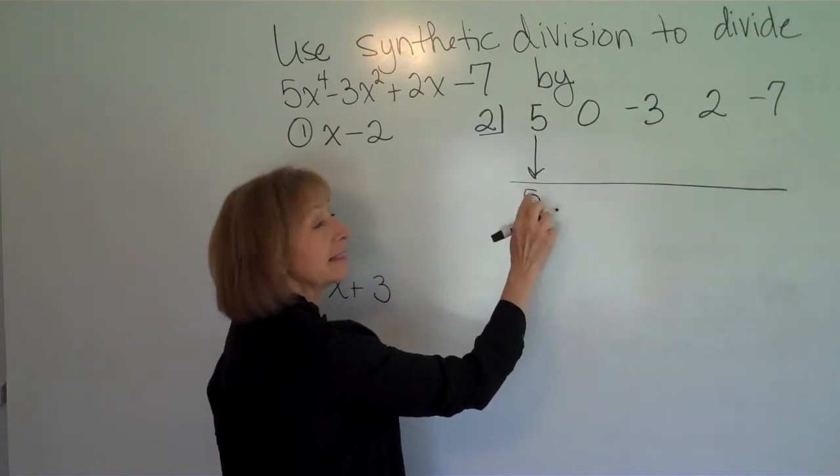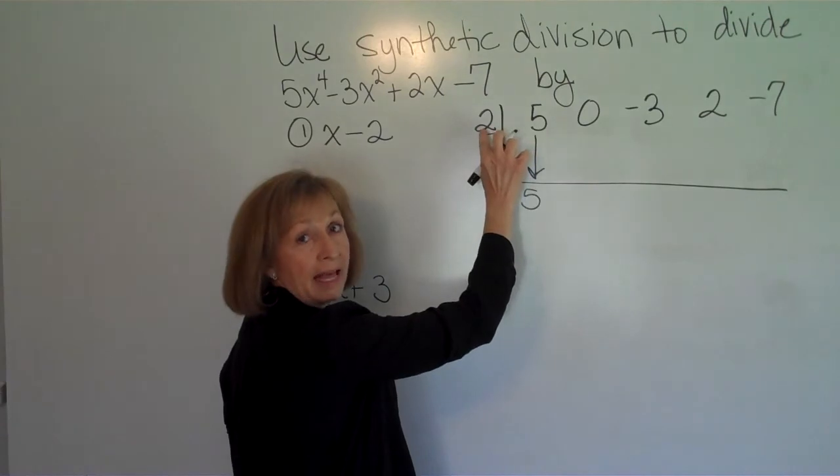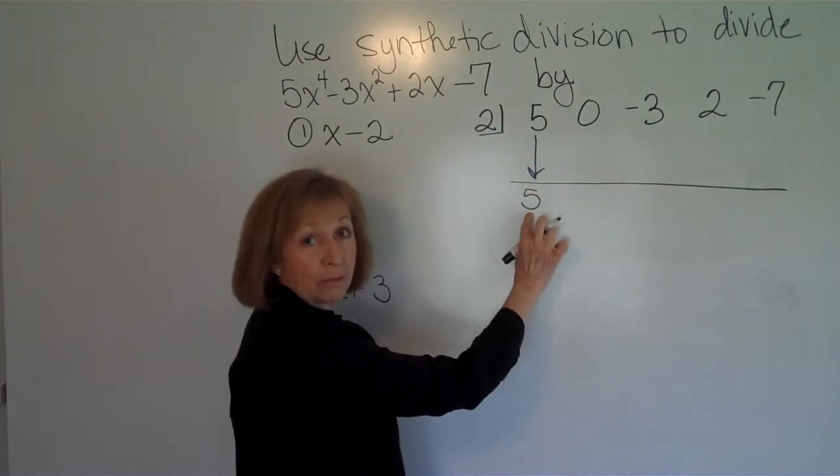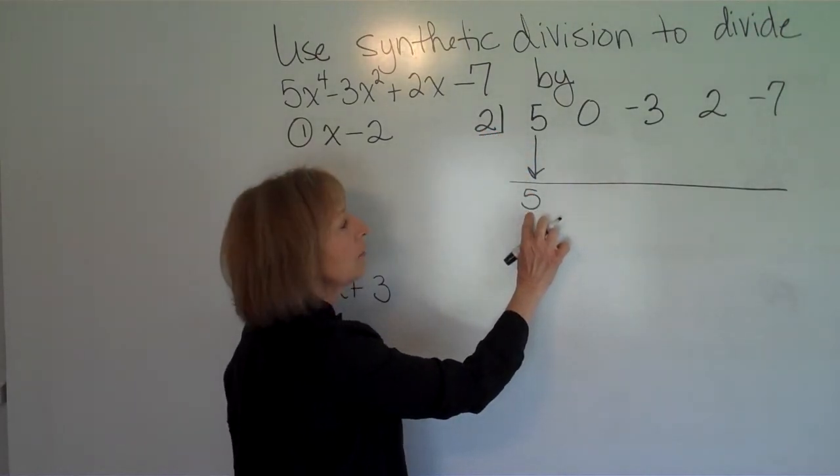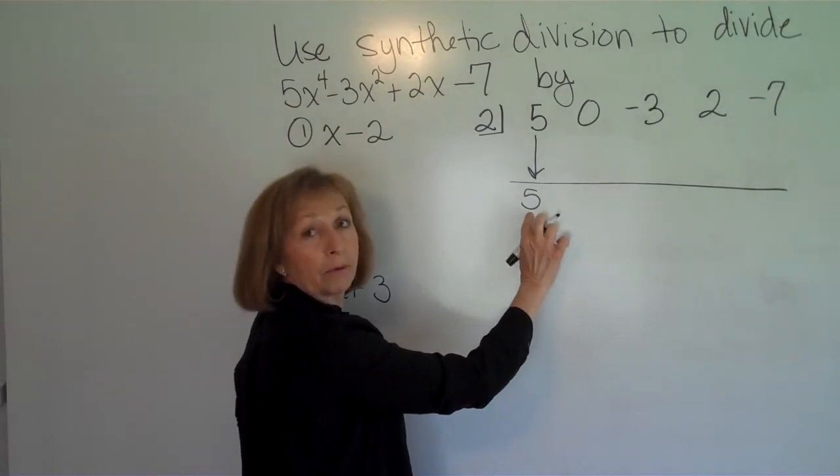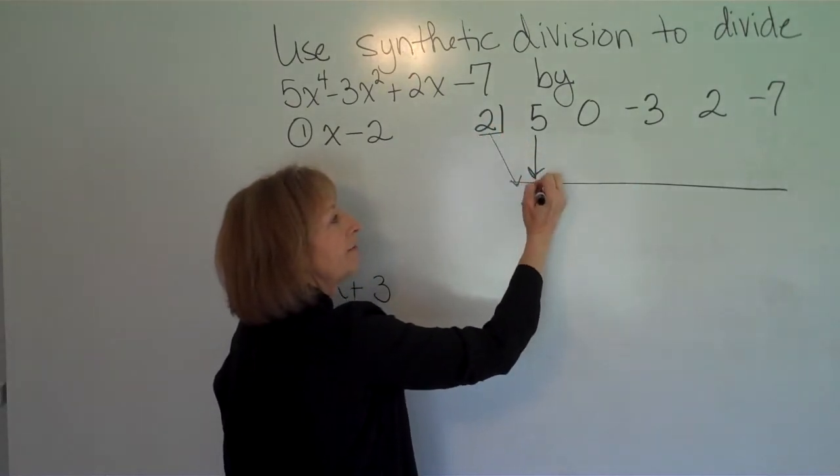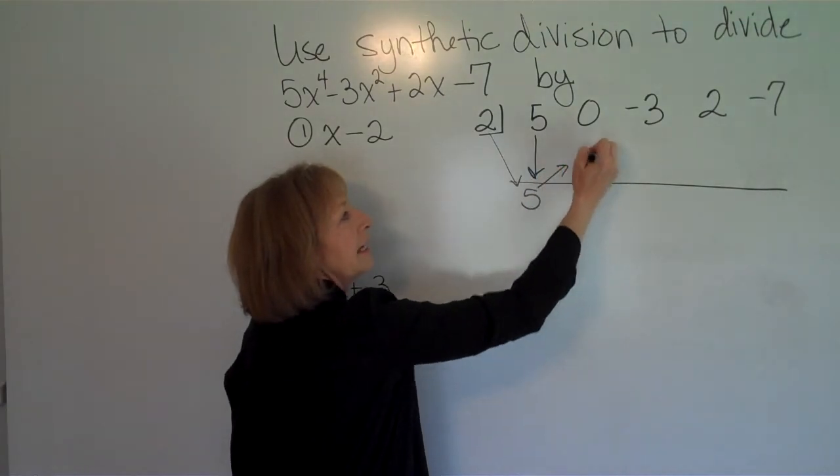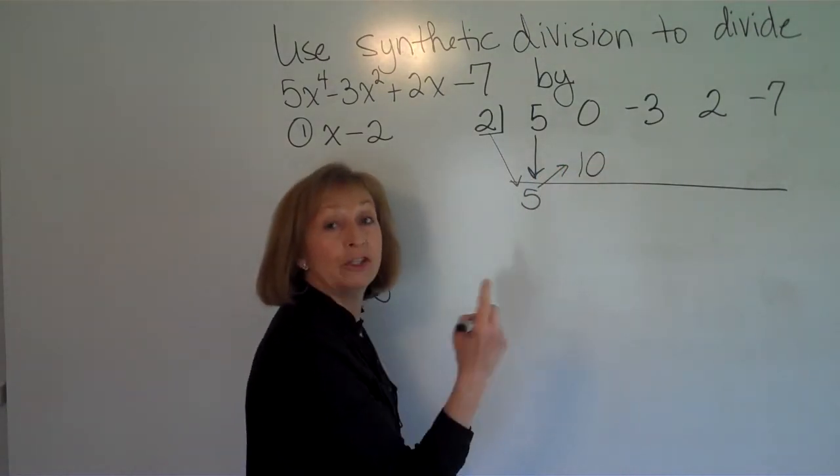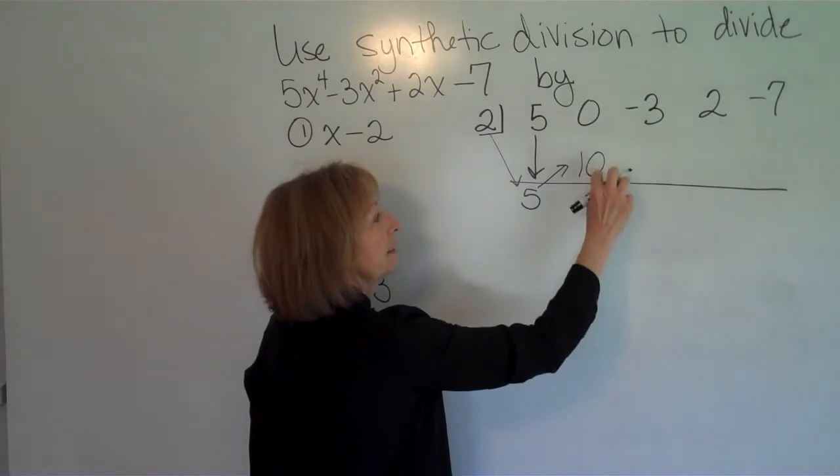Now the next stage you multiply what's in the half box times the number that's below the horizontal line and write that product up underneath the next number. So 2 times 5 is 10, and I put a 10 underneath the next number. And then you add. So 0 plus 10 is 10.